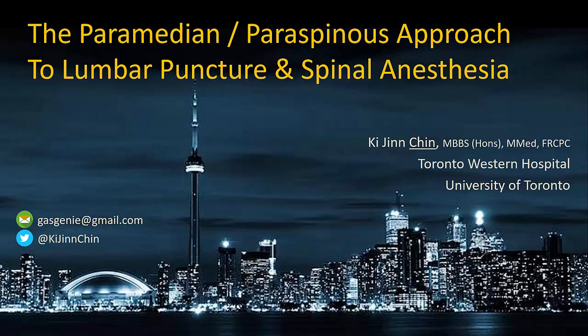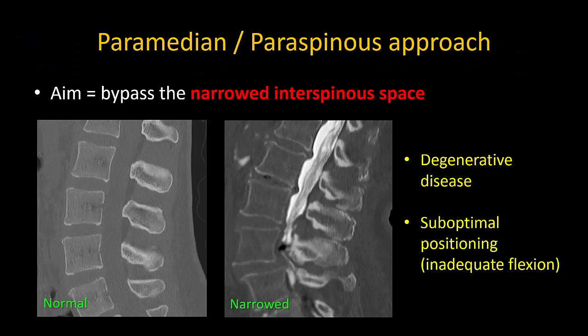In this video, I will describe how to perform the surface landmark-guided paramedian or paraspinous approach to lumbar puncture and spinal anesthesia. The main advantage of the paramedian or paraspinous approach is that it allows us to bypass narrowed interspinous spaces that make the midline approach difficult or impossible. Narrowed interspinous spaces are usually the result of degenerative spine disease, inadequate lumbar flexion, or both — a classic example being the elderly hip fracture patient.